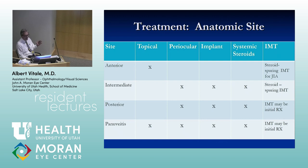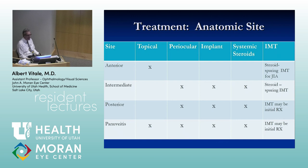In anterior uveitis, topical steroids are the choice. In intermediate uveitis, we usually begin with periocular injections and sometimes systemic diseases, and then advanced therapy is needed. Posterior uveitis similarly. Panuveitis — inflammation affecting all segments of the eye — we have everything available to us.